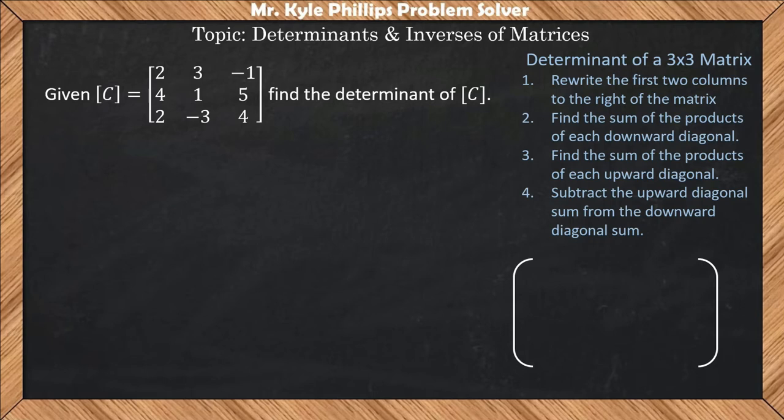This particular method that we're using is called the lattice method. So the first thing that you're going to do is rewrite the first two columns to the right of the matrix.